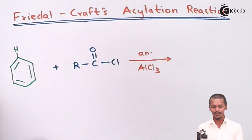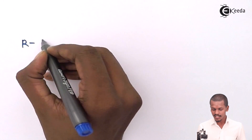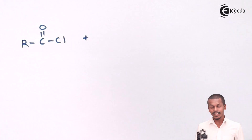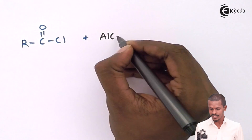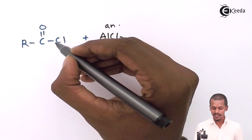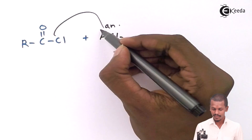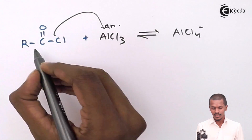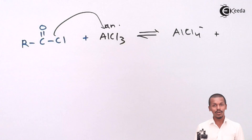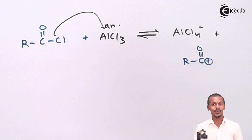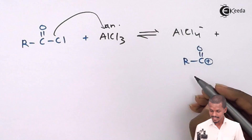Let me give the reaction here. RC(=O)Cl when reacted with anhydrous AlCl3 — the Cl⁻ is gained by AlCl3 to form AlCl4⁻, making the carbon positively charged. This gives RC=O⁺, which is basically known as the acylium ion.